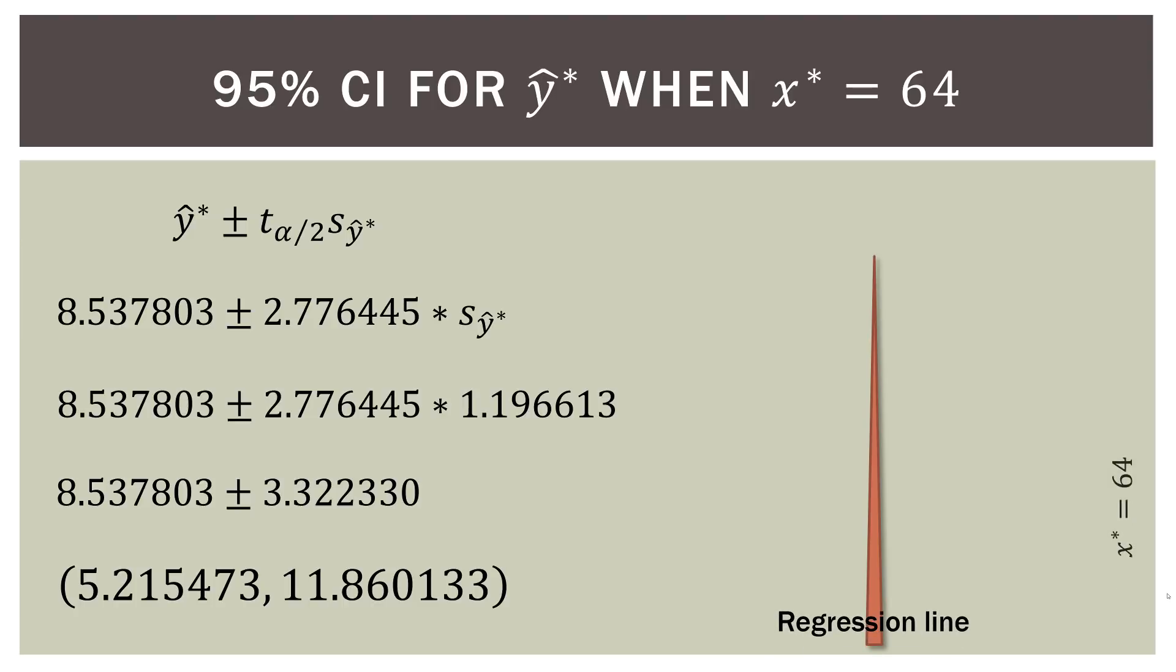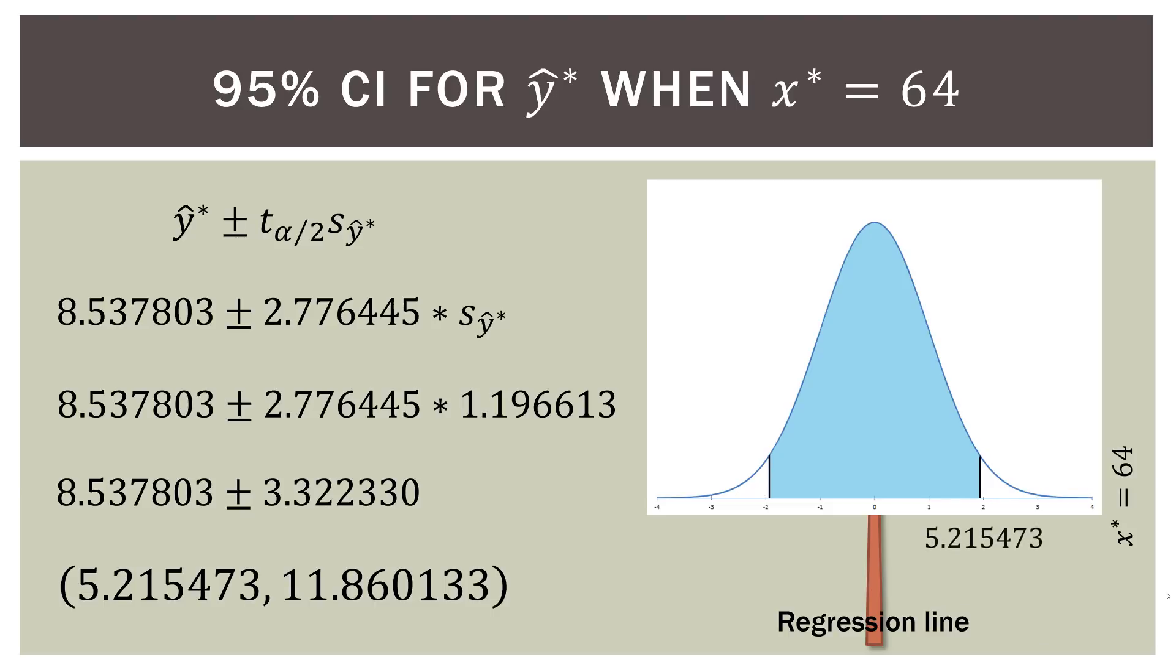So here's our regression line. And we have, I'm sorry to do this visually for you. Here's our regression line. And then we have our bill of $64 over here on the right. Now at that point, we have a distribution of means. So I'm going to put a distribution at that point. So the lower boundary is 5.215. The upper boundary of that is 11.86. So this is our 95% confidence interval for the mean tip amount when the bill is $64.